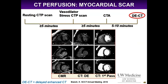Another benefit of CT perfusion is it can detect myocardial scar using late enhancement imaging at the end of washout. You wait 5–10 minutes for contrast to wash out, but if there's scar or fibrosis the contrast remains in the interstitial tissue. You can see contrast in areas of infarct. Comparing CMR late gadolinium enhancement to CT late enhancement imaging in this example, you see the same areas affected — anterior wall, interventricular septal, and lateral wall — allowing differentiation of ischemia from infarct.